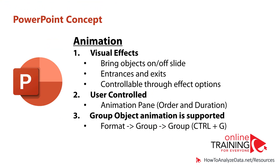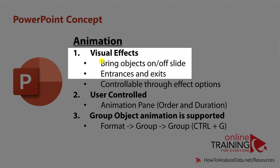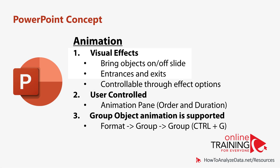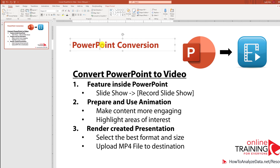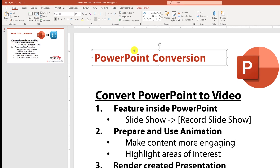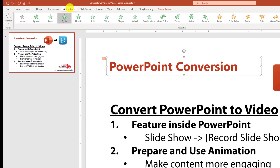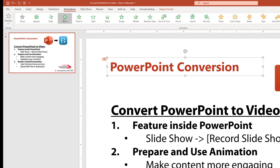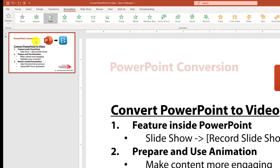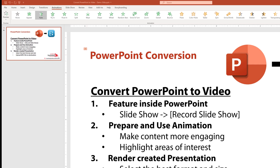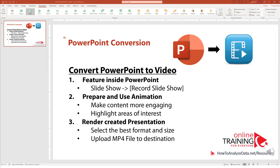Another important concept is animation. Animation is the group of visual effects that bring objects on and off the slides — what Microsoft calls entrances and exits. For example, I can add animation to the title by navigating to the Animation tab and picking the type of animation I'd like. I'm going to pick Fade, which is one of the most common and traditional options used in PowerPoint animations.